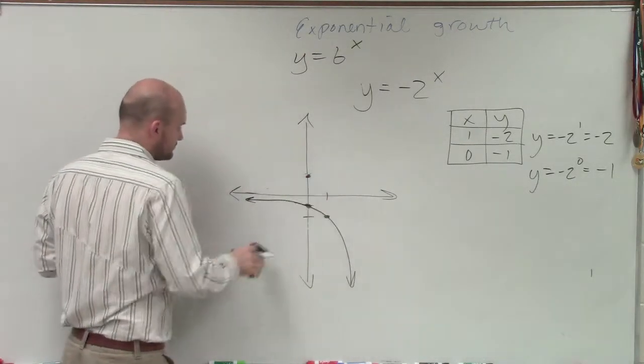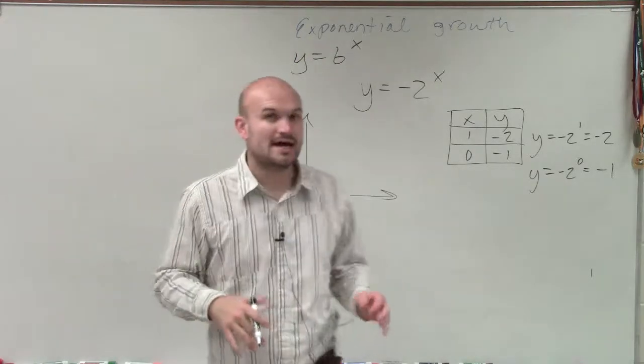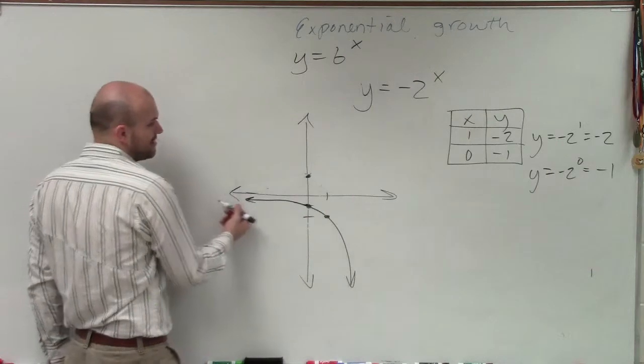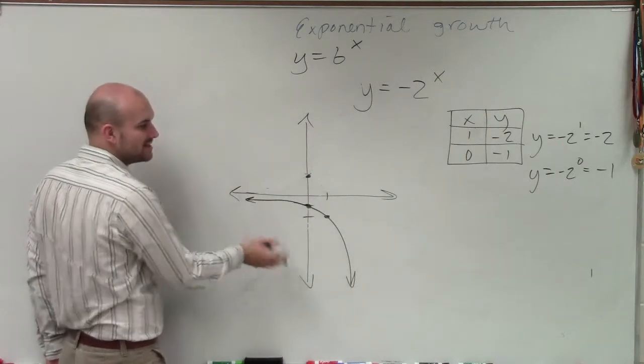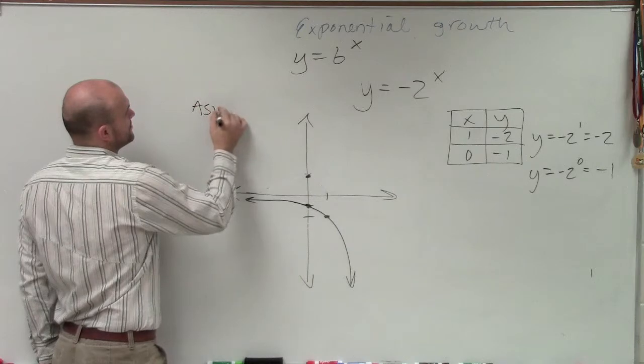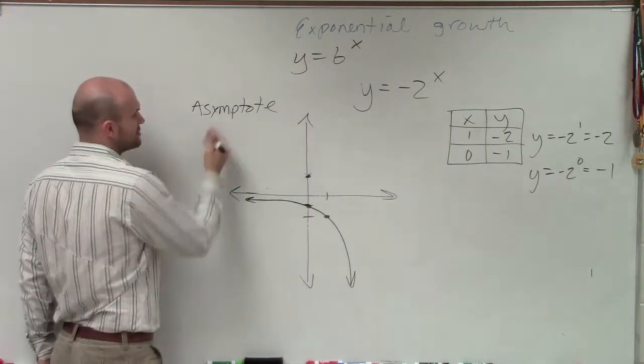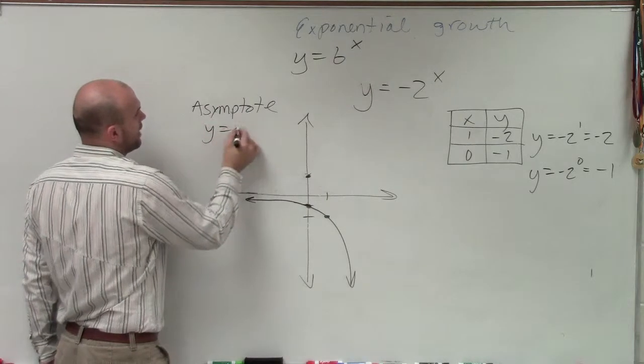Last thing that we'd like to do is determine the domain and the range and the asymptote. Again, you could see that my asymptote, all I did with my reflection, it's still going to be approaching the same line. So my asymptote, the line that my graph is going to be approaching, is still going to be y equals 0.